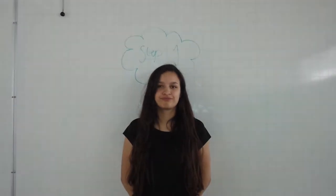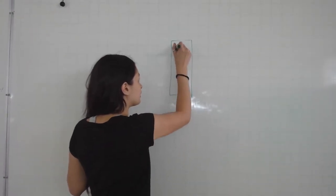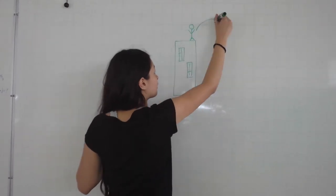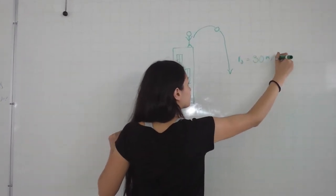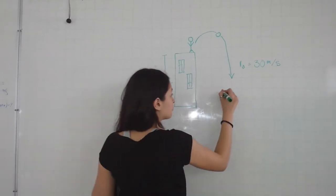Step 1. A ball is thrown upward 30 meters per second from a 50 meter high building. Using antiderivatives, calculate the maximum height achieved by the ball.